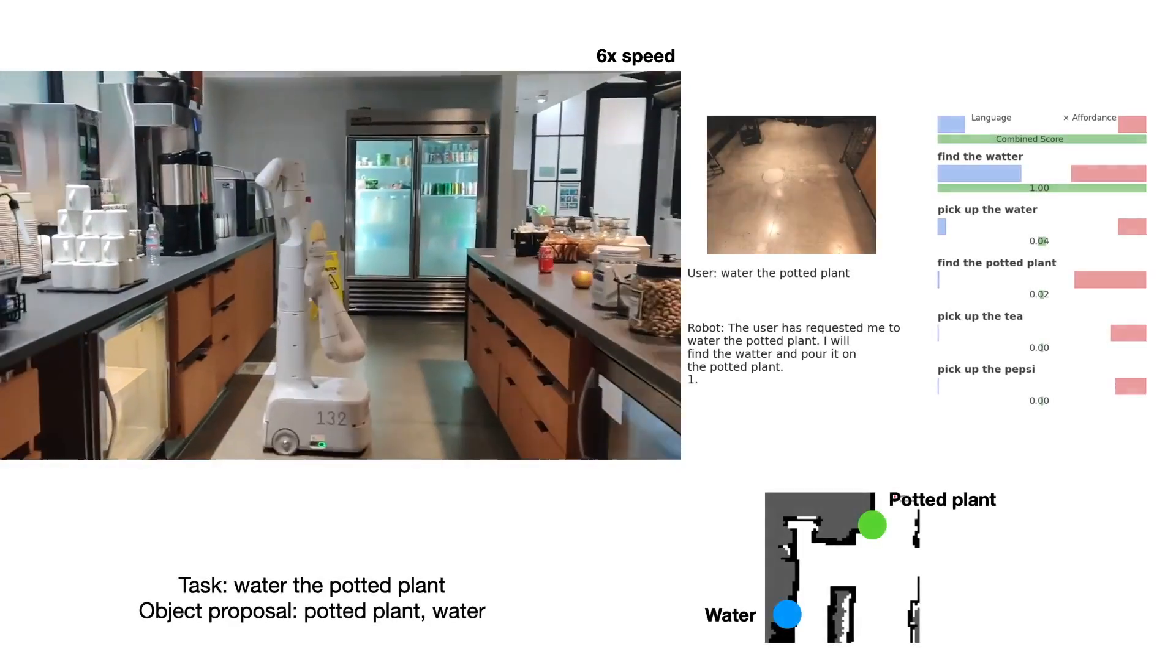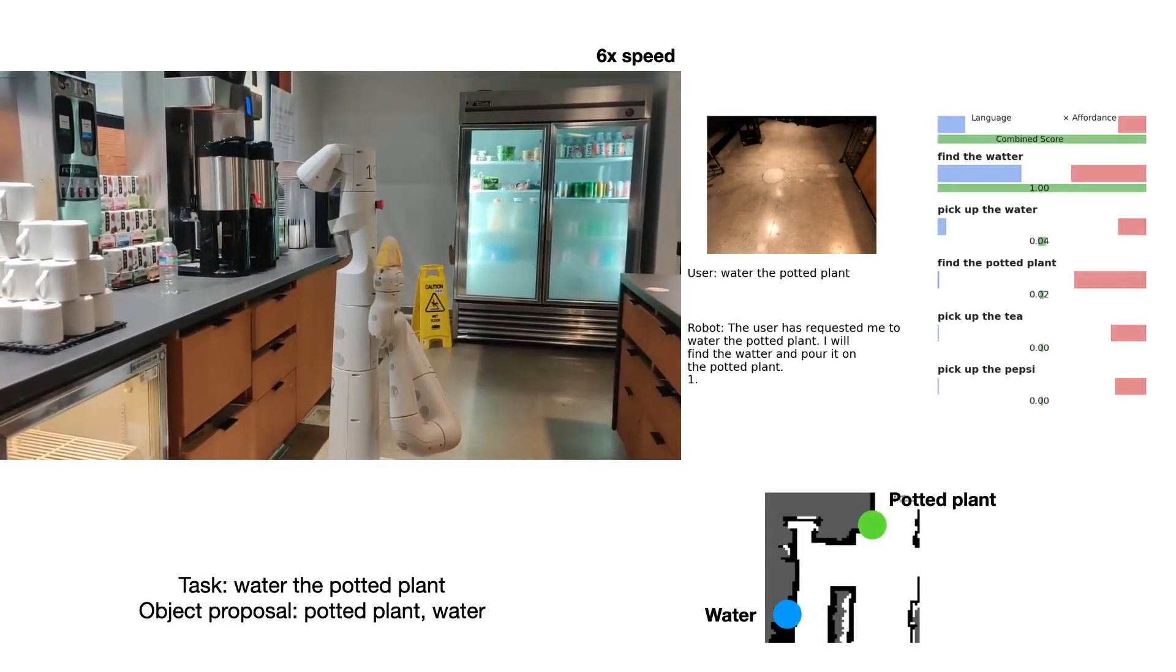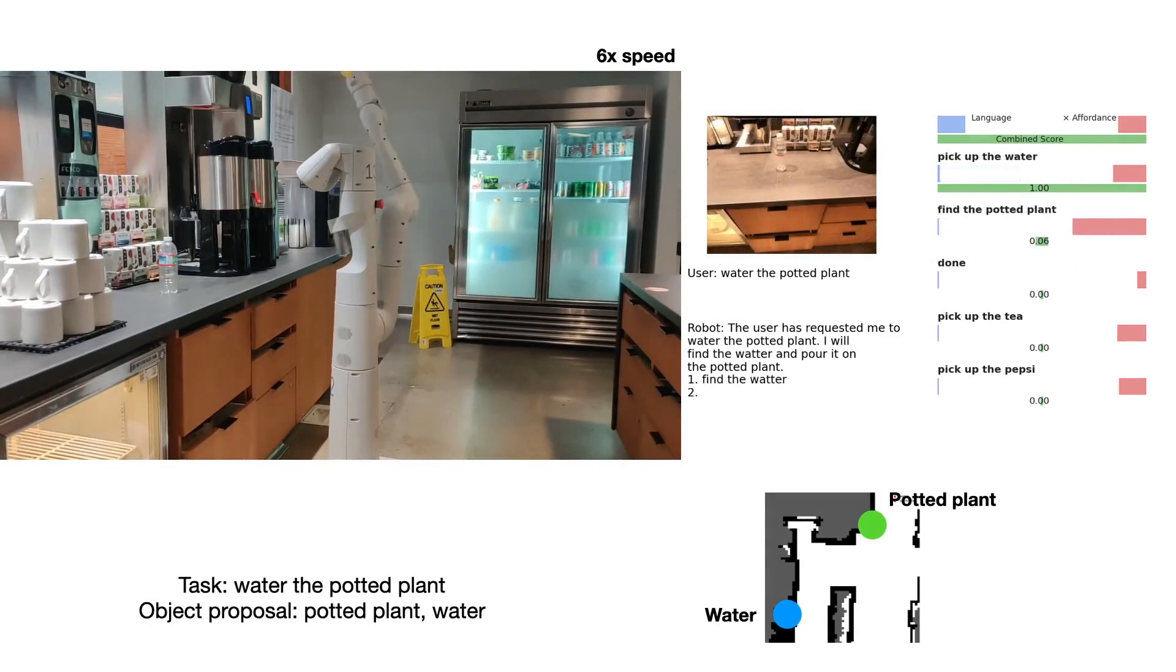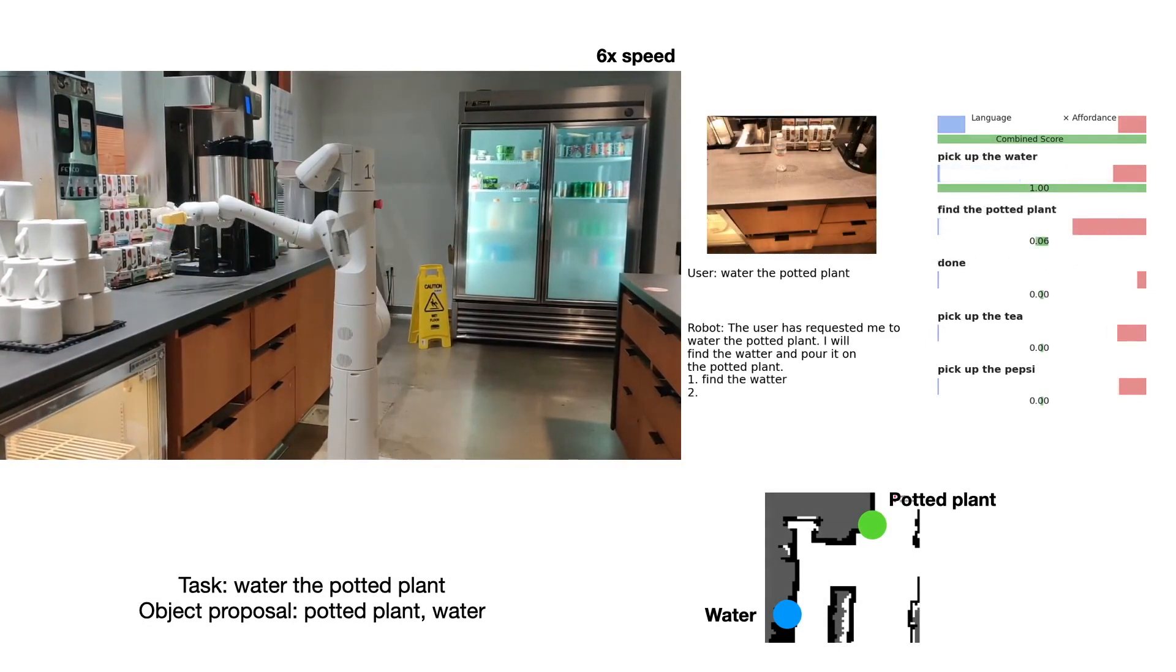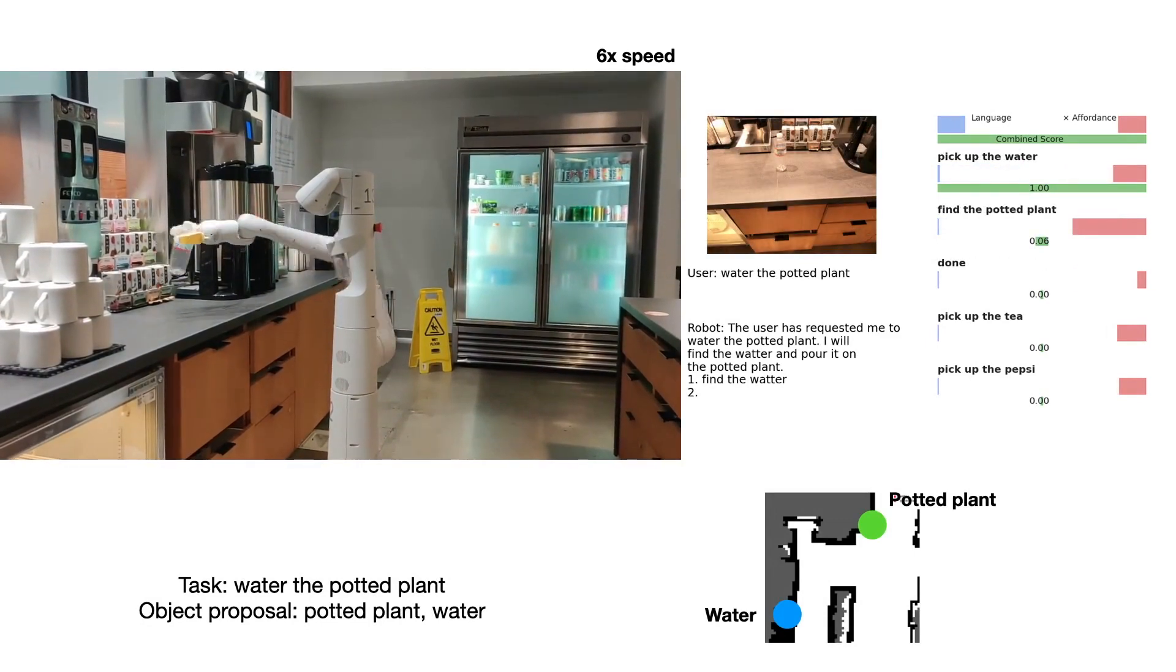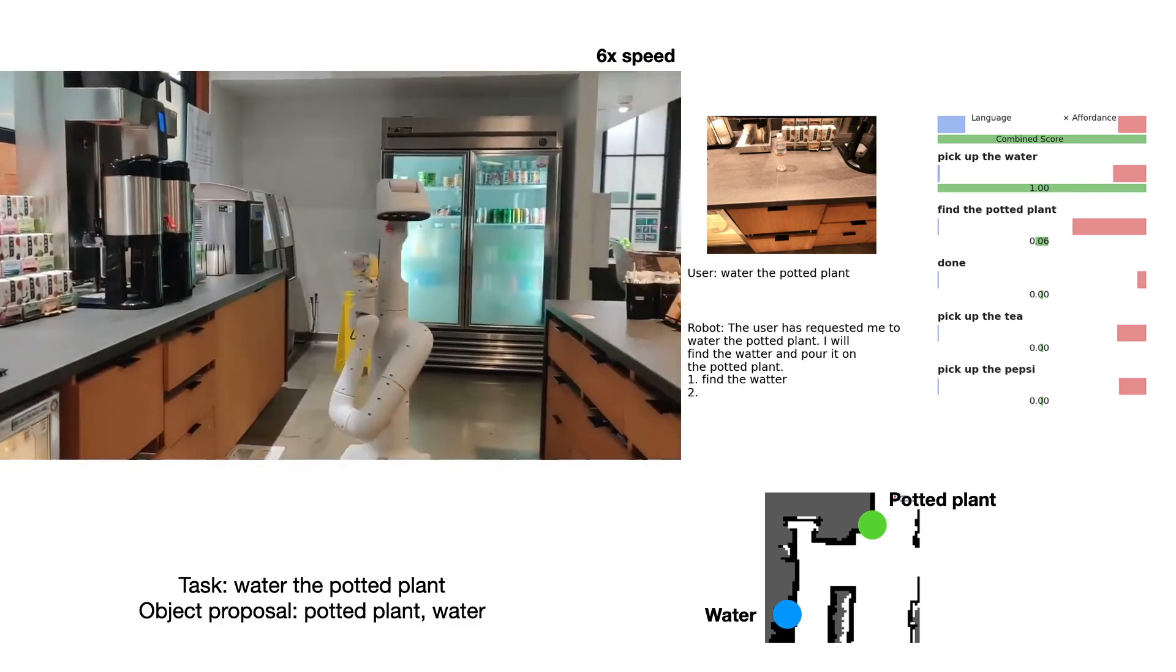We now tell the robot to water the potted plant. The instruction is parsed into two objects, potted plant and water. The robot correctly finds the two objects in the scene. It then generates the plan and executes the task accordingly.